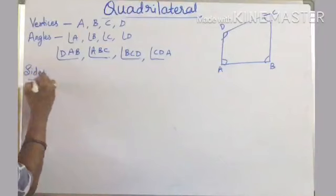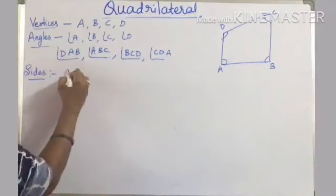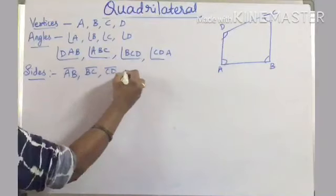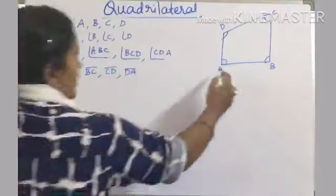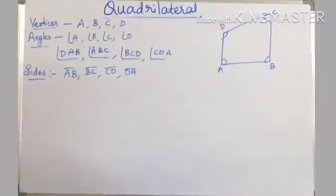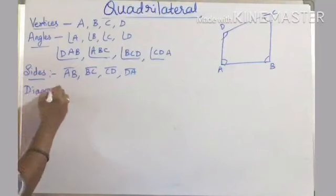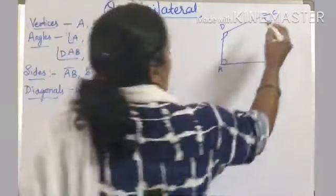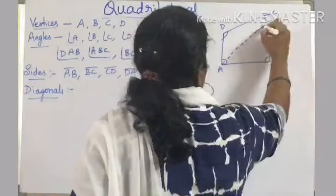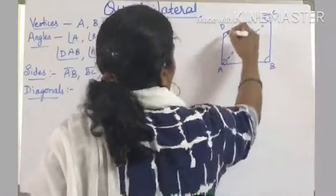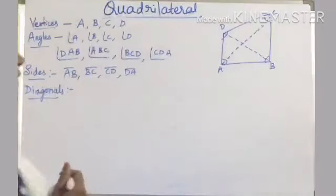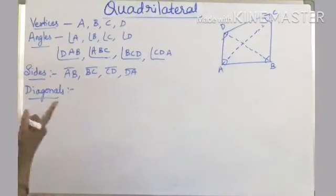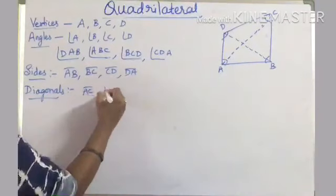Coming to sides — sides are nothing but line segments. The four sides are AB, BC, CD, and DA. Coming to diagonals — diagonals are the line segments joining opposite vertices. A and C, and B and D are the opposite vertices. So the two diagonals are AC and BD.